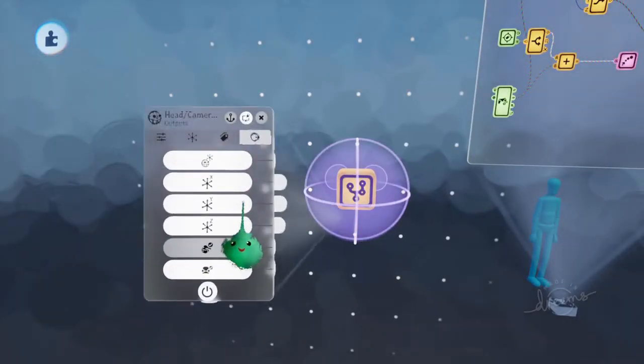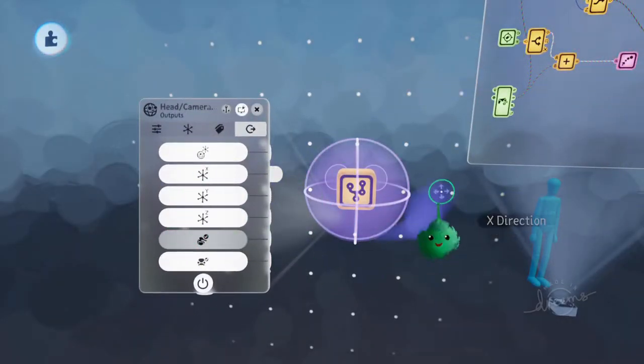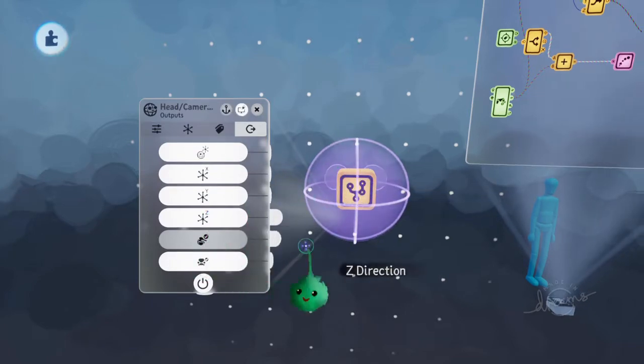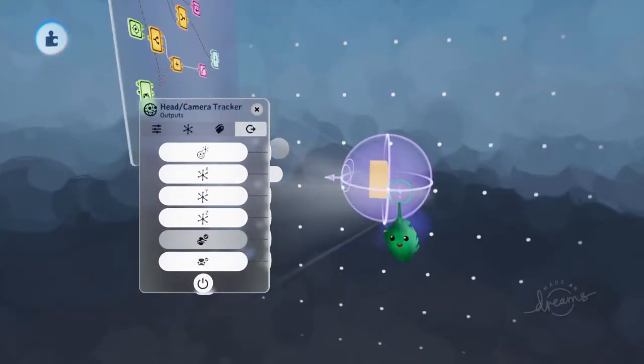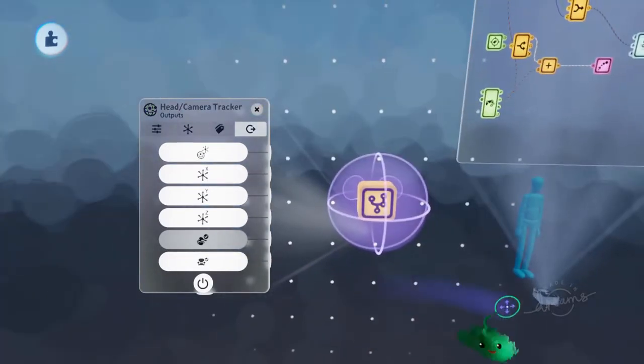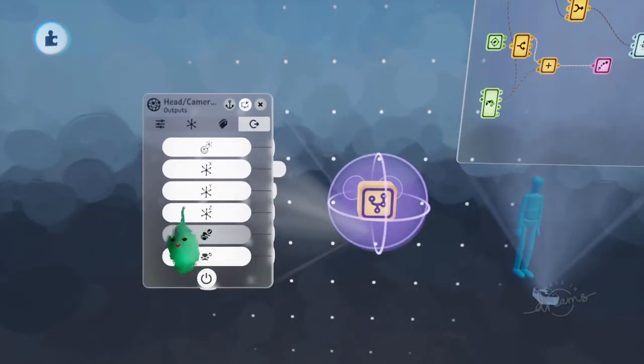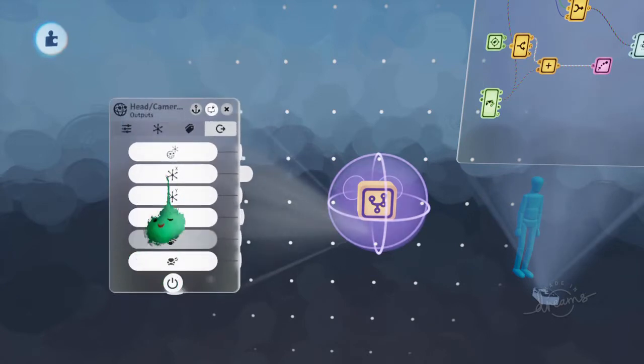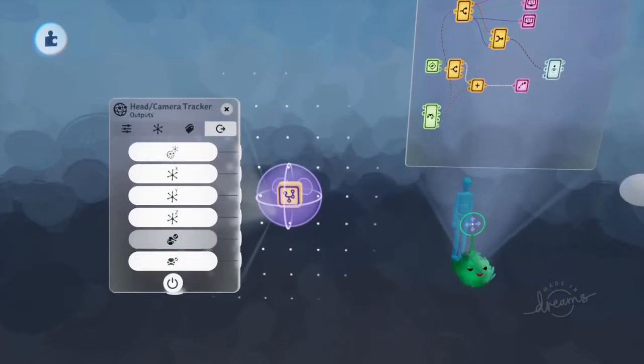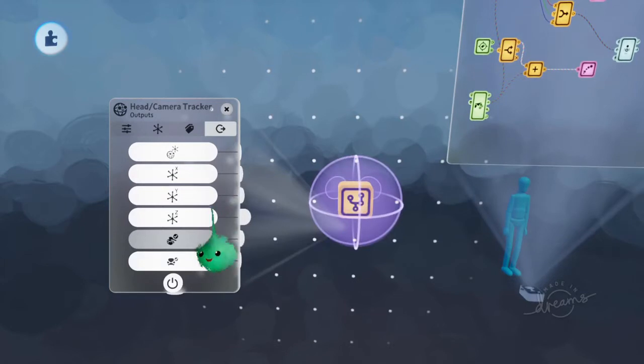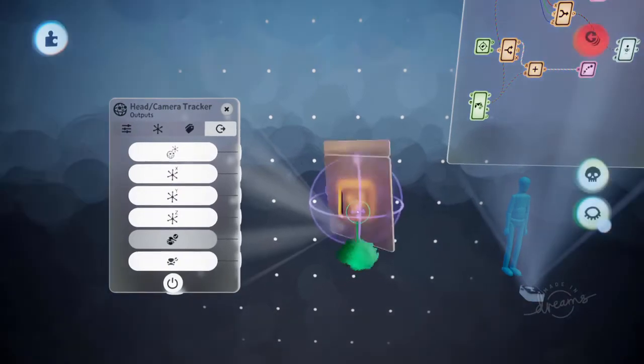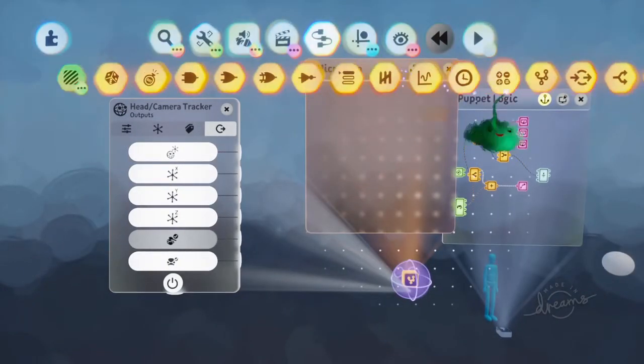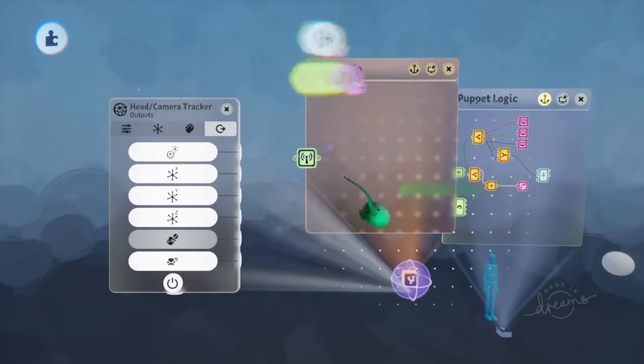It has these outputs for the x direction, which is pointing over there, the y direction pointing up there, and the z direction pointing there or there. I can't remember. You'll have to check out the other tutorial about the head tracker for that. So we want to send these out to anything that cares about what those directions are, because we're going to use those directions to kind of cancel out the camera relativeness.